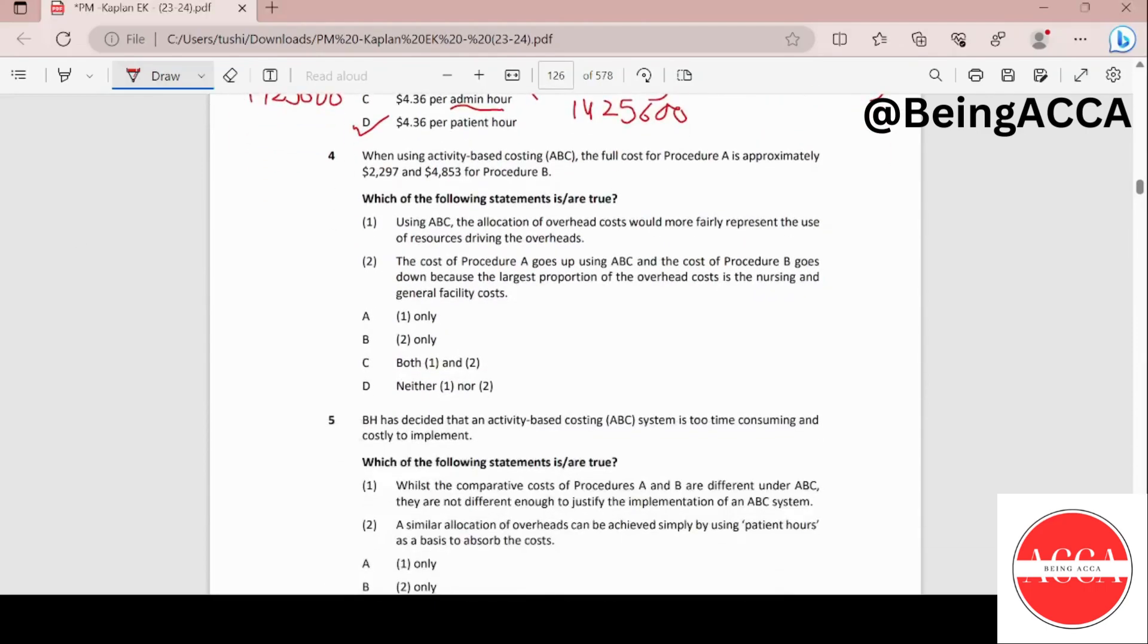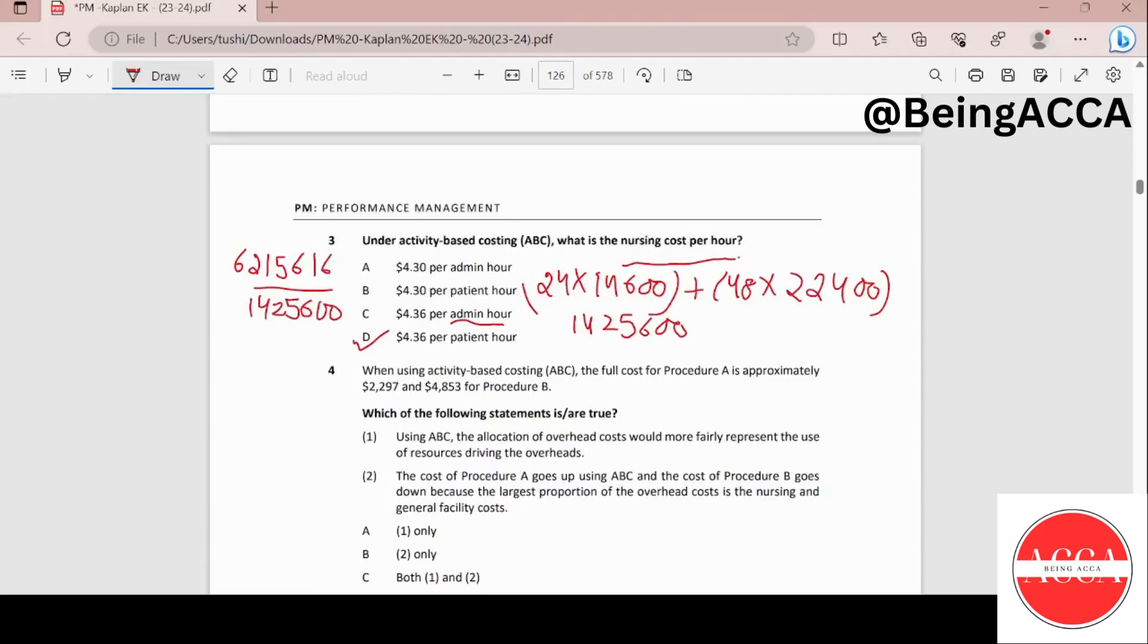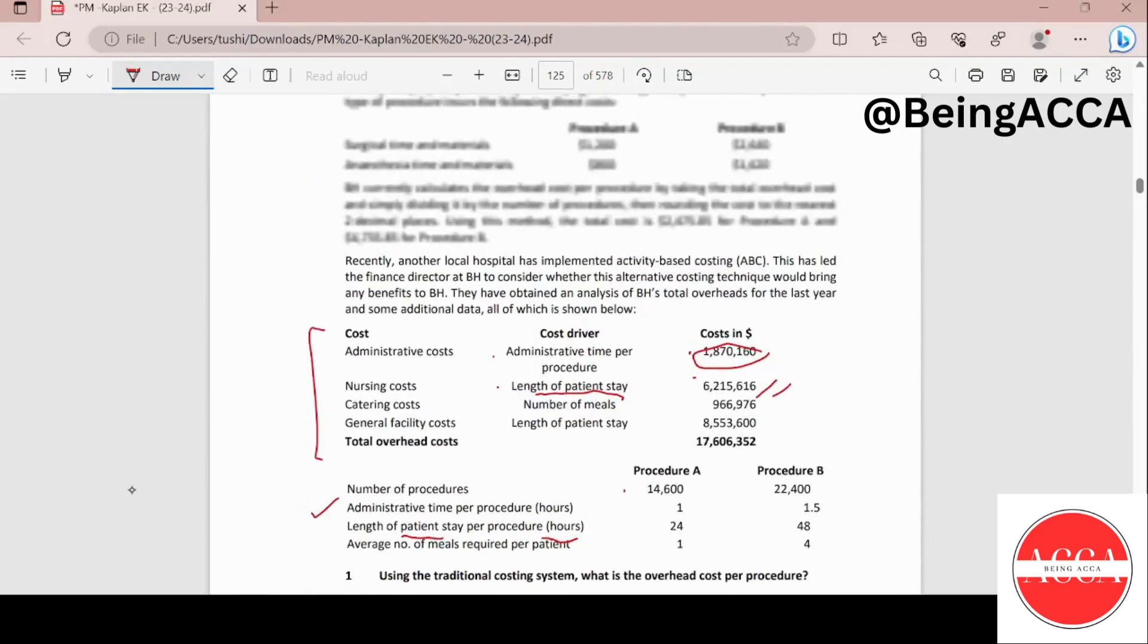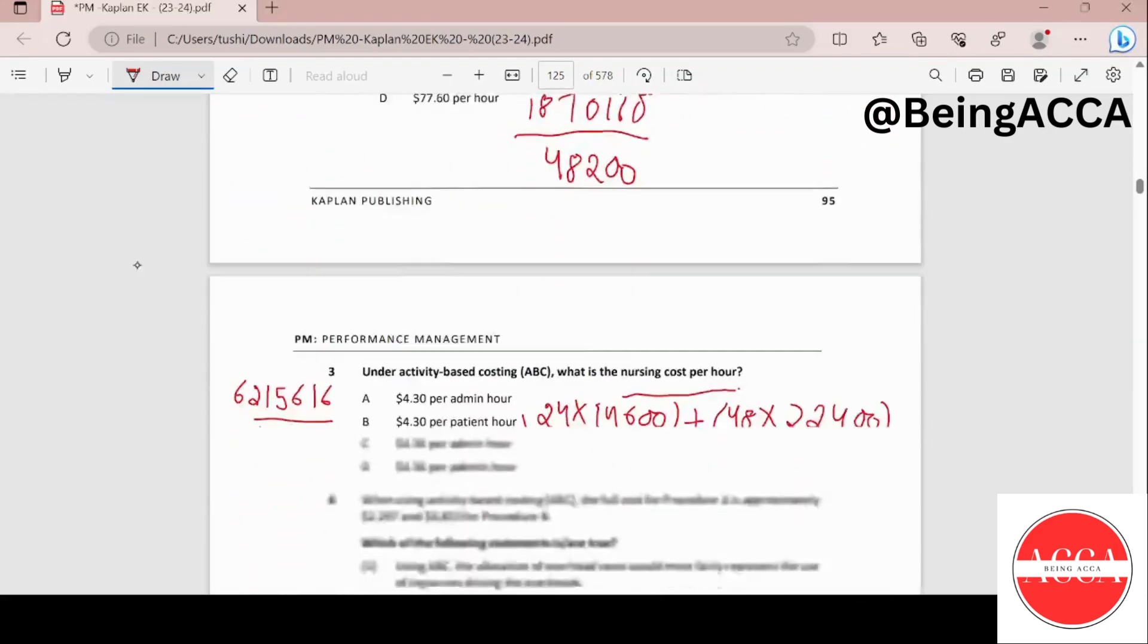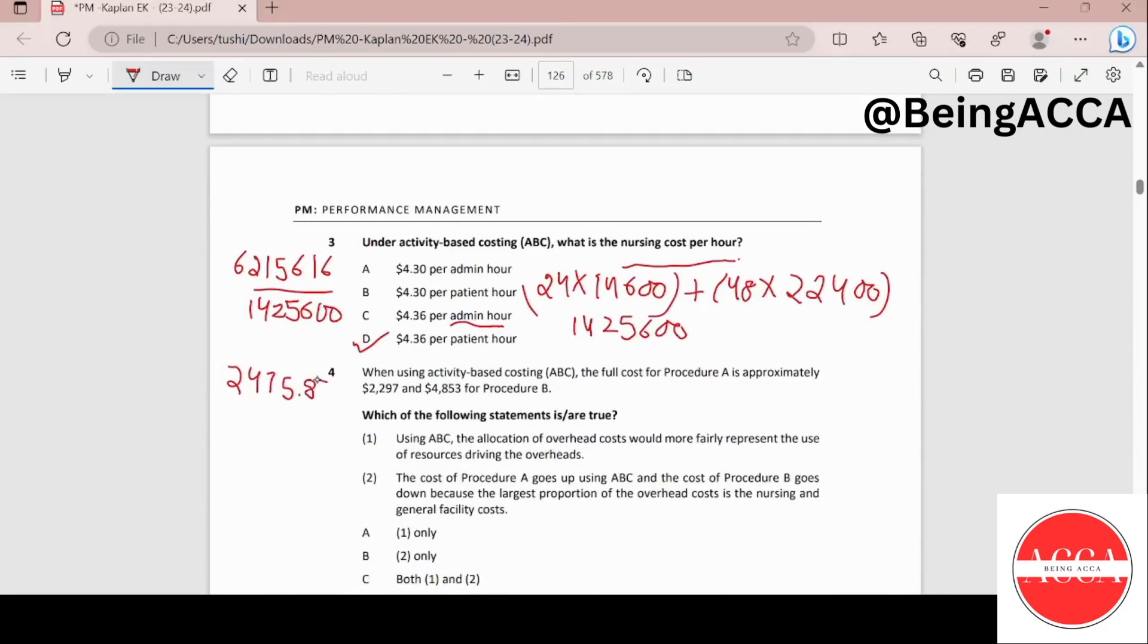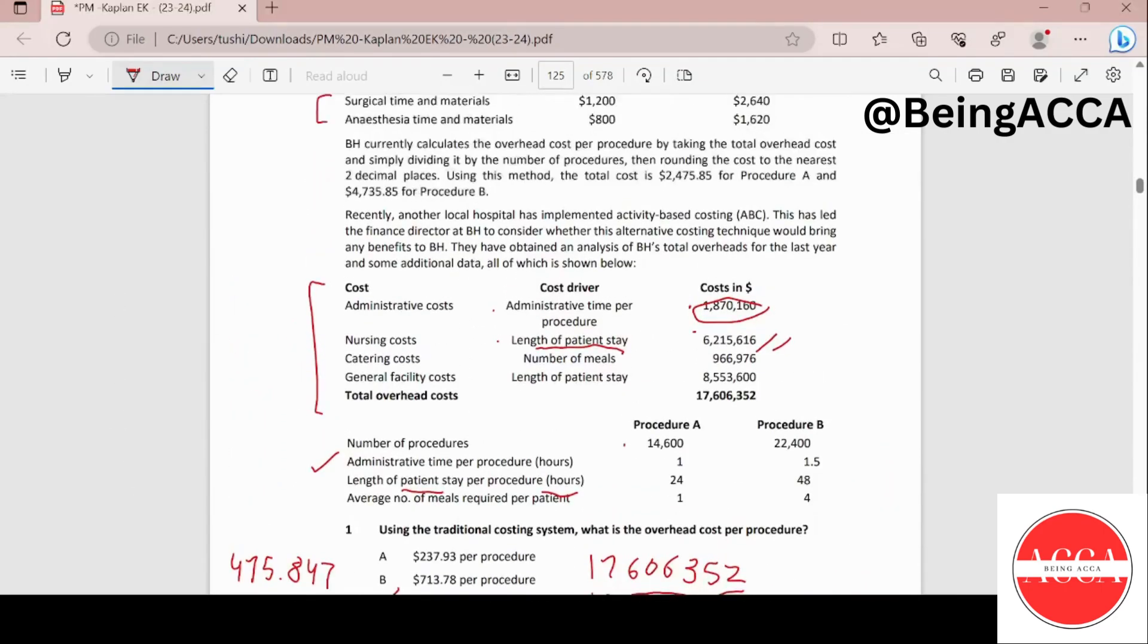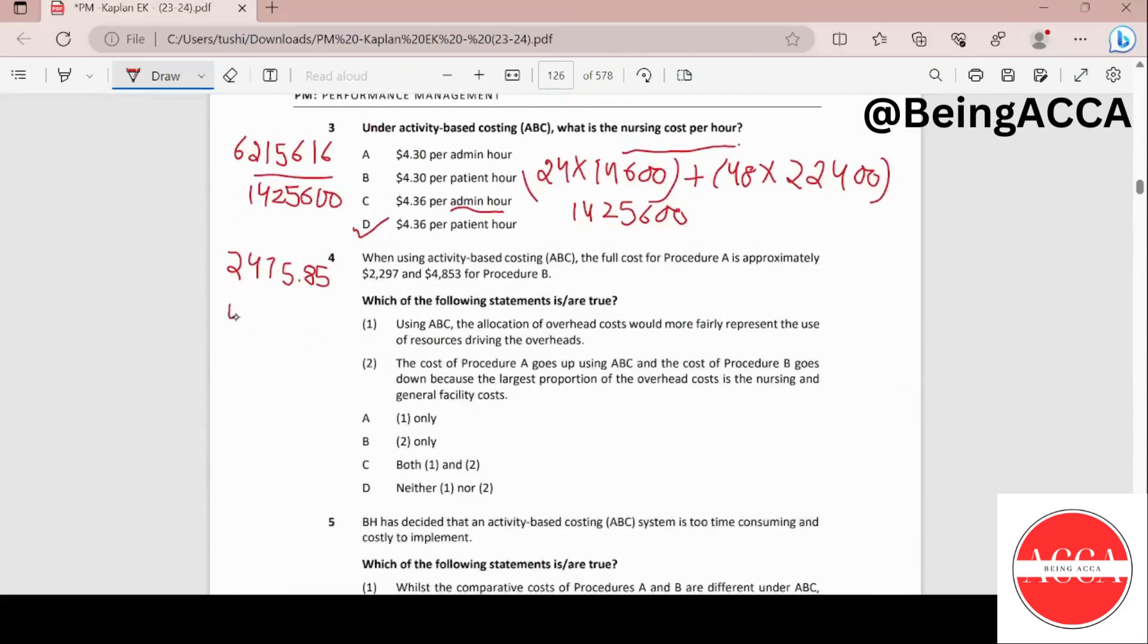Moving on to the fourth one. Using activity based costing, the full cost for procedure A is approximately 2297 and $4853 for procedure B. Which of the following statements is or are true? Let's first write what are the costs using the traditional method that we had gotten. So these were 2475.85 and for procedure B the same was 4735.85. The first statement says using ABC the allocation of overhead costs would more fairly represent the use of resources driving the overheads. This is true because that is what ABC essentially does. It will allocate your overhead costs according to how much of expense is caused due to which activity. So yes, this statement is true.